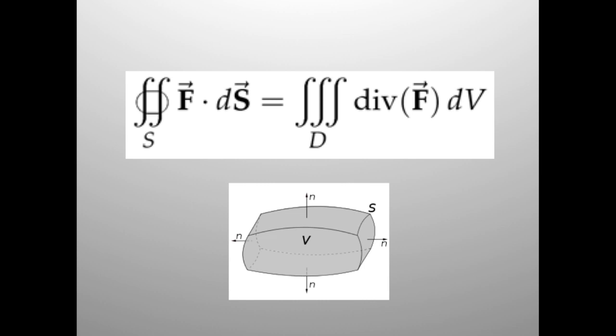We can bump this up another dimension to get Gauss' theorem, also known as the divergence theorem. With Green's theorem we have the integral of a one-dimensional differential form over the boundary of a two-dimensional manifold; with the divergence theorem we have the integral of a two-dimensional differential form over the boundary of a three-dimensional manifold. We're able to get information about a three-dimensional region from its two-dimensional boundary. Calling the three-dimensional region V and the two-dimensional surface S, and given a vector field F, the divergence theorem states that the triple integral of the divergence of F over region V is equal to the surface integral of F over surface S. The differential form is F·dS, the space V is the three-dimensional manifold, the surface S is the two-dimensional boundary, and the exterior derivative is divergence(F)·dV.